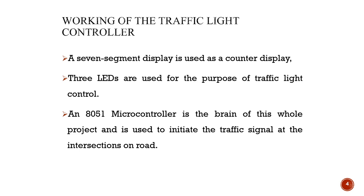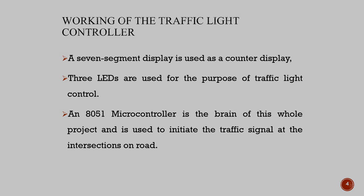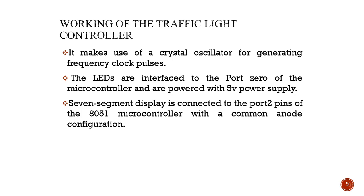Three LEDs are used for indication: one is a red light, one is a green light, and one is an orange light. The brain of the entire project is the 8051 microcontroller, which is used to initiate the traffic signal at the intersection on the road. For generating clock pulses, it uses a crystal oscillator — the 8051 has two crystal oscillator pins, XTL1 and XTL2. The three LEDs are interfaced to Port 0, powered with a 5V supply, and the seven-segment counter display is connected to the 8051 in a common anode configuration.